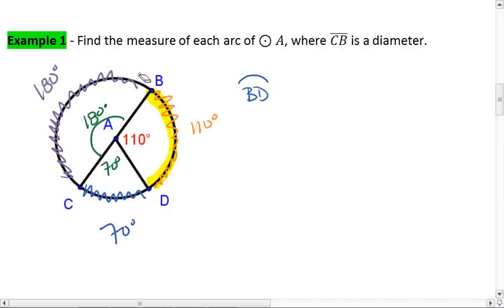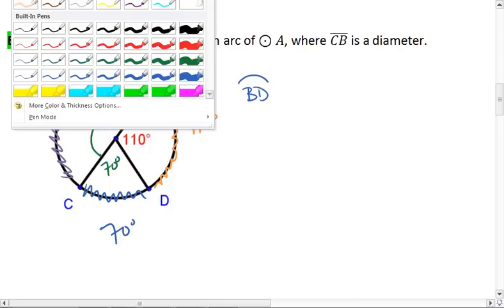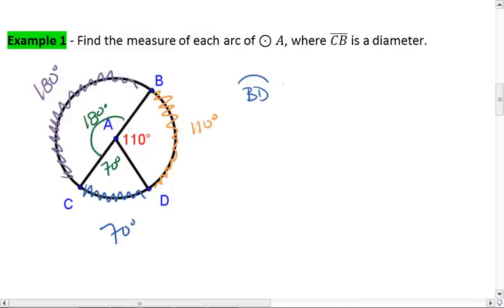Whenever we only have two letters, we always assume it's talking about the smaller of the two arcs. So B to D is this orange arc here, in which case BD is 110 degrees. CD is going to be 70 degrees, and BC is 180 degrees.